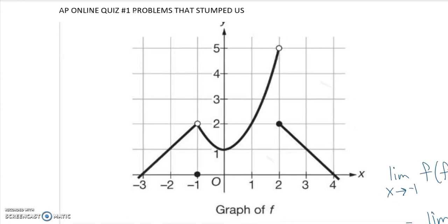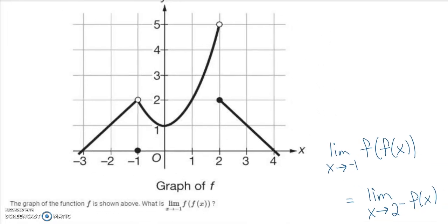Here's one of the problems from the unit one quiz. We're finding the limit as x approaches negative one of f(f(x)). The limit as x approaches negative one of f(x) is equal to two. So then we're going to look at f of two. The limit as x approaches two from the right and from the left are different — it's not continuous there, so we have a problem and that theorem doesn't directly apply.